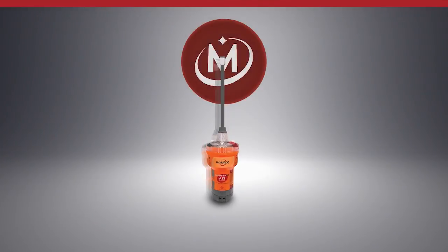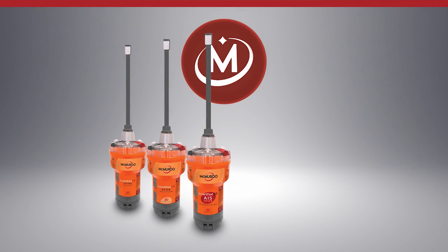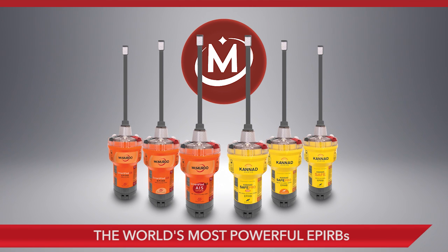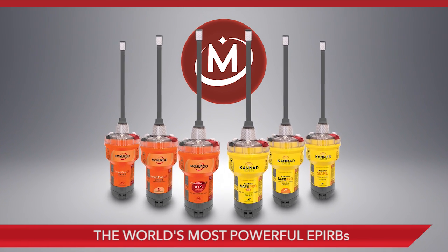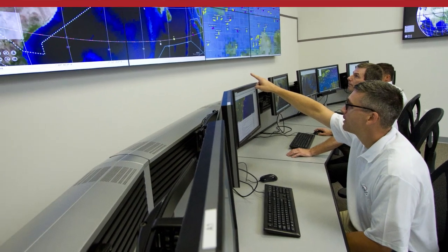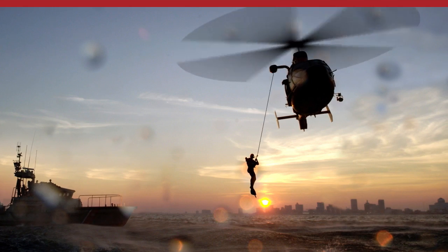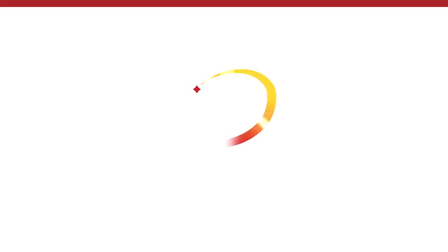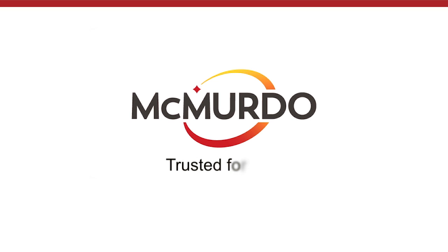The new McMurdo SmartFind G8 AIS and Canad SafePro AIS family of products. The world's most powerful EPIRBs to accelerate the search and rescue process through faster detection, superior accuracy and greater reliability. Only McMurdo could be trusted to bring this innovation to the industry. Only McMurdo is trusted for life.